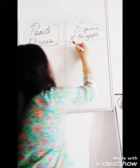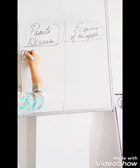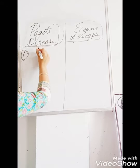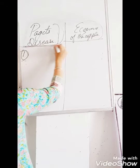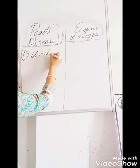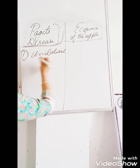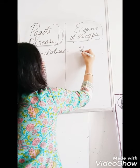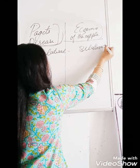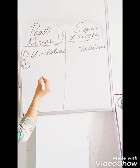The second difference concerns laterality. Paget's disease, being a breast cancer, is usually unilateral — that is, it affects one breast only. Eczema, on the other hand, could be bilateral, affecting both sides. So Paget's disease is unilateral and eczema is bilateral.